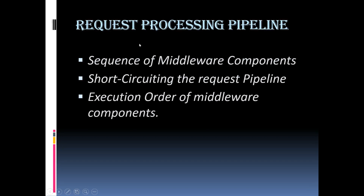ASP.NET Core Request Processing Pipeline consists of a sequence of middleware components which are going to be called one after another. Each middleware component can perform some operations before and after invoking the next component using the next delegate. The middleware component can also decide not to call the next middleware component, which is nothing but short circuiting the request pipeline. The middleware components have access to both incoming request and outgoing response. The order in which the middleware components are added in the configure method of the startup class defines the order in which these middleware components are going to be invoked on request and the reverse order for the response. So the order is critical for defining security, performance and the functionality of the application.